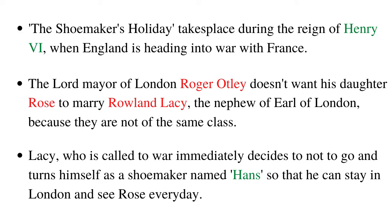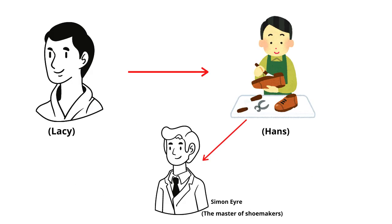The Shoemaker's Holiday takes place during the reign of Henry VI, when England is heading into war with France. The Lord Mayor of London, Roger Oatley, doesn't want his daughter Rose to marry Roland Lacey, the nephew of the Earl of Lincoln, because they are not of the same class. Lacey, who is called to war, immediately decides not to go and disguises himself as a shoemaker named Hans so that he can stay in London and be near Rose. He goes to work in the shop of Simon Eyre, the master of shoemakers.